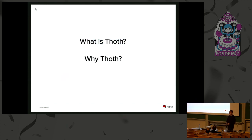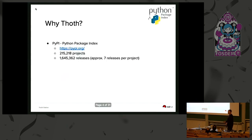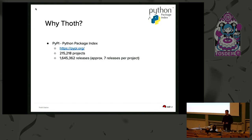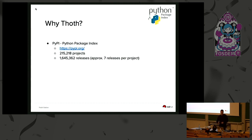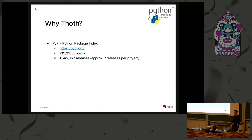So what is TOT and why TOT? You probably know PyPI, the Python Package Index — that's the index that hosts open source projects. When I wrote these slides, I found out that there are something like 200,000 projects available out there, free to use. And there are about 1.6 million releases. That's quite a huge number, and this number grows each and every day, especially with the popularity that the Python ecosystem has.